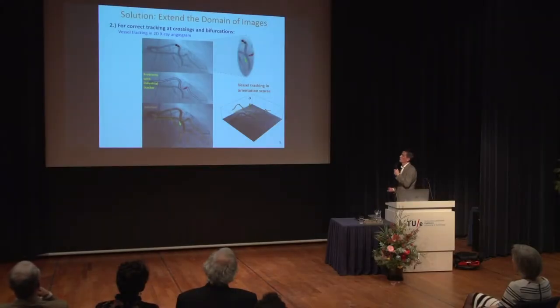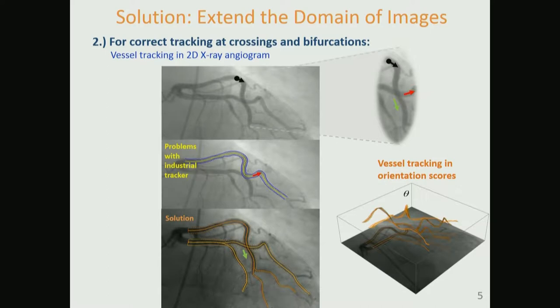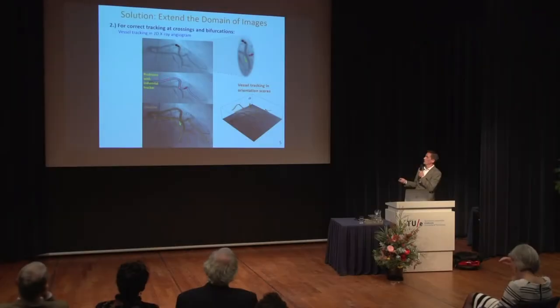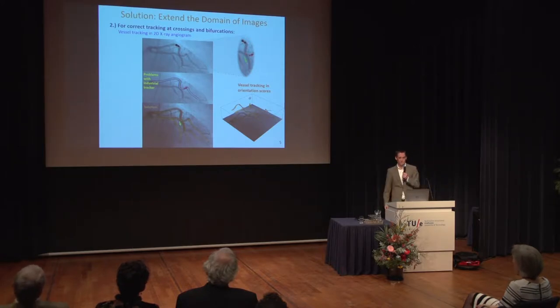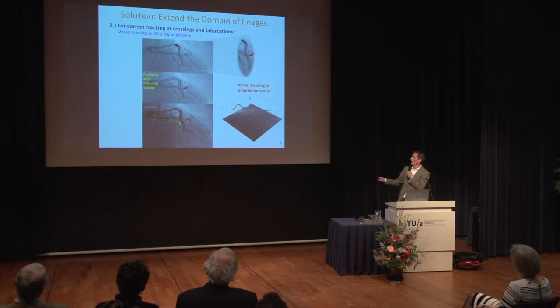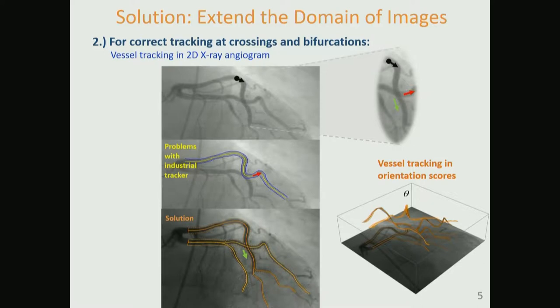This approach is very useful for correct tracking of blood vessels or elongated structures at crossings and bifurcations. Here you see a 2D X-ray angiogram containing coronary arteries. An industrial tracker typically fails at the crossing — the tracker follows the wrong blood vessel at the exit. But if you go to the orientation score domain and apply tracking in the space of positions and orientations, there are no such crossings, and you get a solution to this problem. We test it on large datasets and consistently get very good results.